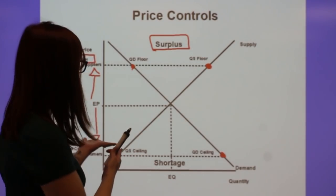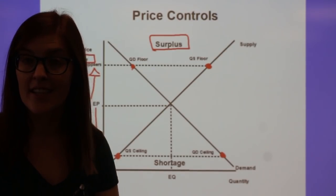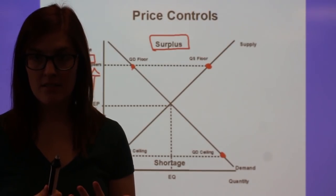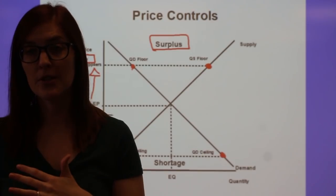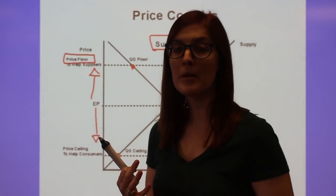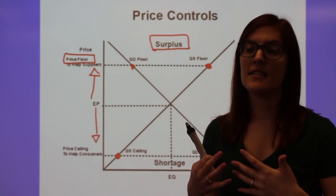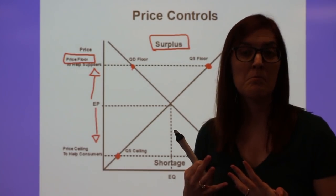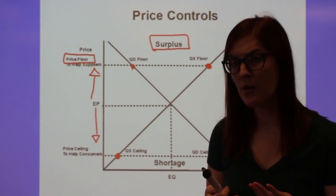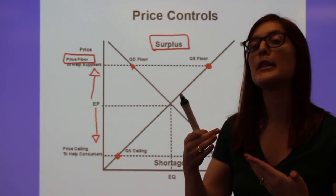The opposite scenario is when the government does a price ceiling. This is a maximum price, so now this is to help the consumers. Help the consumers who can't survive at equilibrium price, it's too high for them to be able to afford it. So you might see this in something that consumers need, but the price is too high for them to afford it normally.